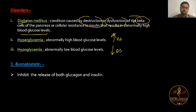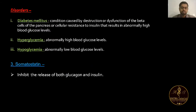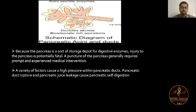The third type of hormone is somatostatin, which inhibits the secretion of both glucagon and insulin.